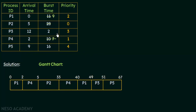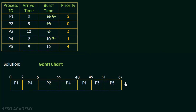After P1 finishes, the remaining processes are P3 and P5. P3 has priority 3 and P5 has priority 4, so P3 has the higher priority. P3 gets the CPU and executes for 2 milliseconds — from 49 to 51ms. Then P5 finally gets the CPU at the 51st millisecond and executes for 16 milliseconds — from 51 up to 67ms — completing all processes.